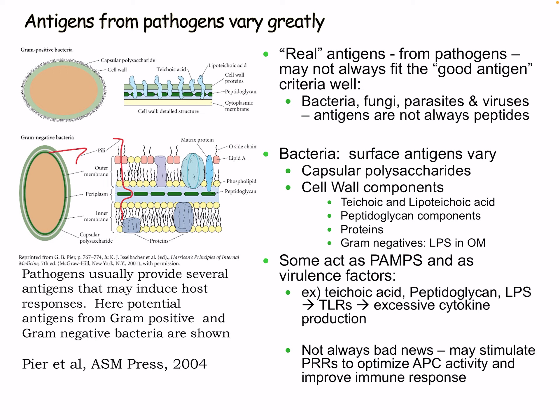Real antigens from pathogens don't always fit the ideal antigen criteria. Bacteria, fungi, parasites, and viruses all have antigens that are not always peptides. Bacteria have surface antigens that vary, including capsular polysaccharides and cell wall components like teichoic acid, lipoteichoic acid, peptidoglycan, and in gram-negatives, LPS and outer membrane proteins. Some of these act as PAMPs and virulence factors — teichoic acid, peptidoglycan, and LPS stimulate toll-like receptors and can cause excessive cytokine production. They may also stimulate PRRs to optimize APC activity and improve the immune response.